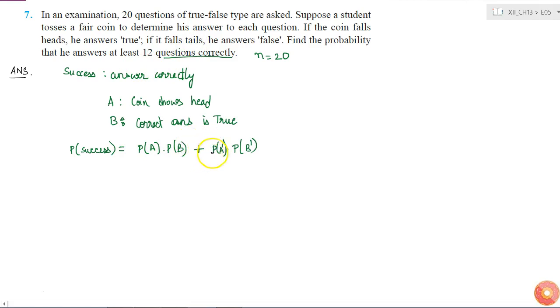Now, what is the probability of A? Probability of A is half, and probability of A complement is 1 minus half, which is again half. And this is also half. So this is equal to one by four plus one by four, which is half.